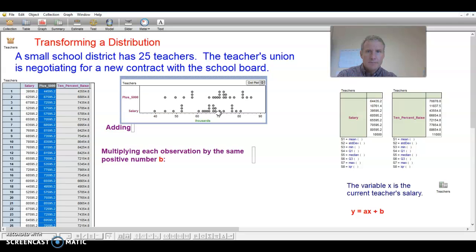The quartiles shift to the right. So the whole distribution shifts to the right. Anything involving position shifted, in this case, $5,000 to the right with that generous increase of $5,000 for every teacher. I will undo that.